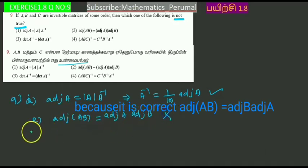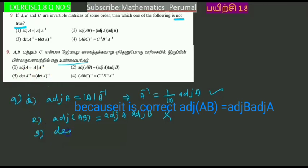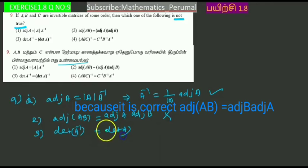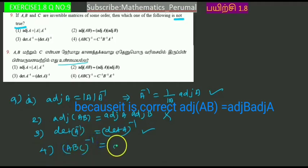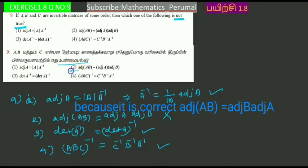The answer is correct. Determinant of A inverse — that is the third option. Fourth option: A, B, C inverse equals C inverse B inverse A inverse. The second option is not true — that is the incorrect one.